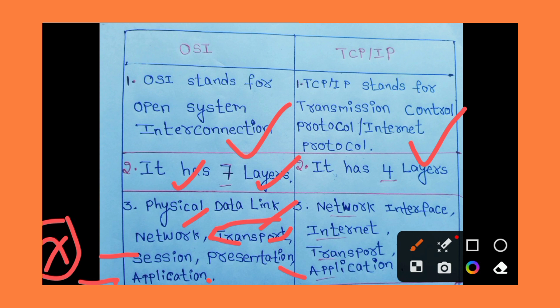The Physical Layer deals with physical connections — physical hubs, switches, routers, physical cabling connections, LAN cables, twisted-pair cables, and connections between systems.